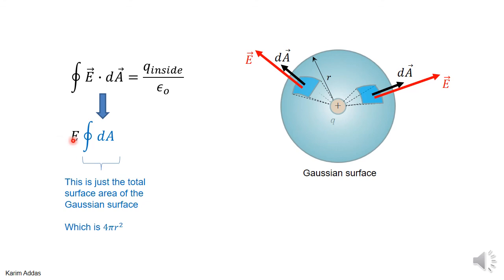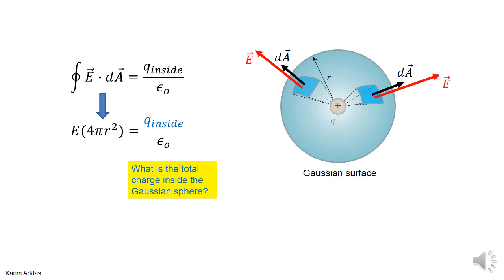Now, once you took the electric field outside, what's left over is integration of dA. Integration of dA is just the total surface of the Gaussian sphere, which is 4 pi r squared. The left-hand side of Gauss's law becomes the electric field, which I don't know, times 4 pi r squared.